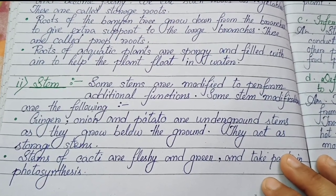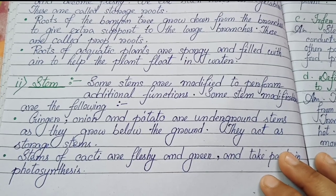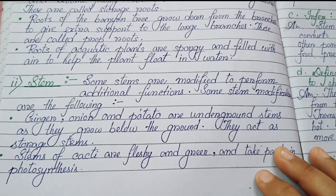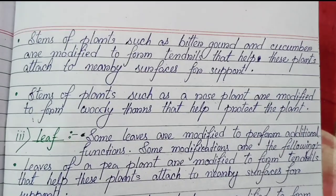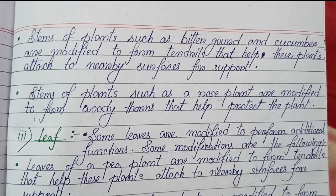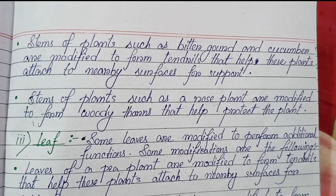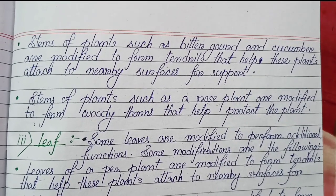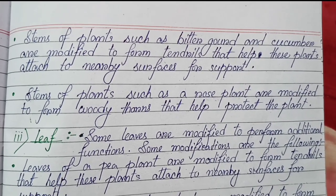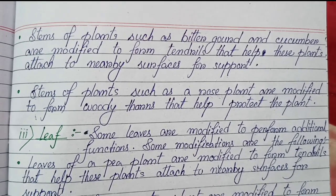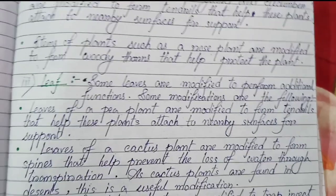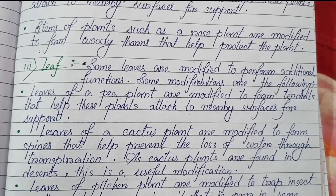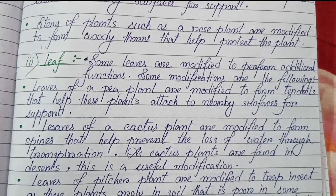Stem modifications: (1) ginger, onion and potato are underground stems — as they grow below the ground, they act as storage stems; (2) stems of cacti are fleshy and green and take part in photosynthesis; (3) stems of plants such as bitter gourd and cucumber are modified to form tendrils that help these plants attach to nearby surfaces for support; (4) stems of plants such as rose plants are modified to form woody thorns that help protect the plant.